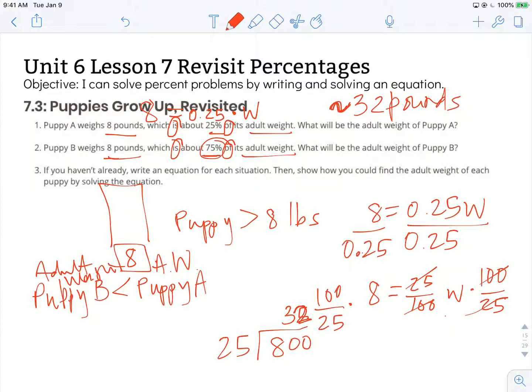So just like I did before, I'm going to look for those keywords that are going to help me know how to build this equation. So 8 pounds is 75% of its adult weight. So my equation is going to look the same. It's going to be 8 is equal to 75 hundredths of the adult weight. I could use B as my variable. Or I could write that in fraction form, and I would get 8 is equal to 75 hundredths of puppy B's adult weight.